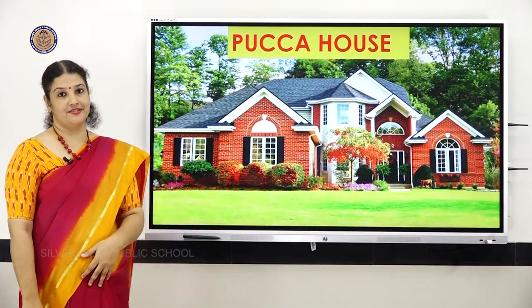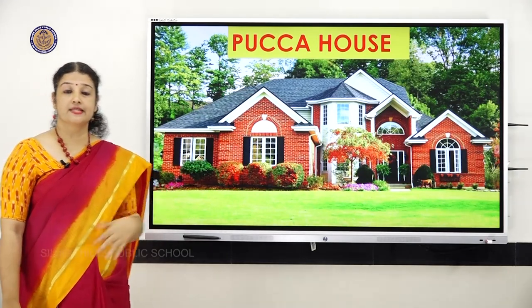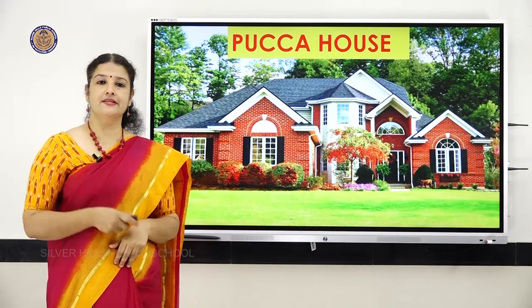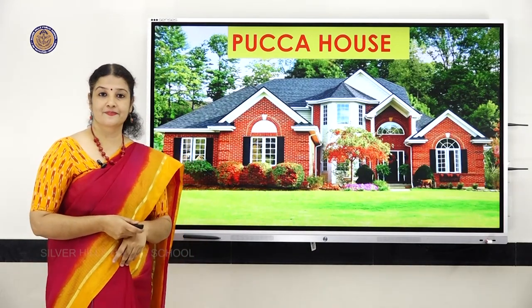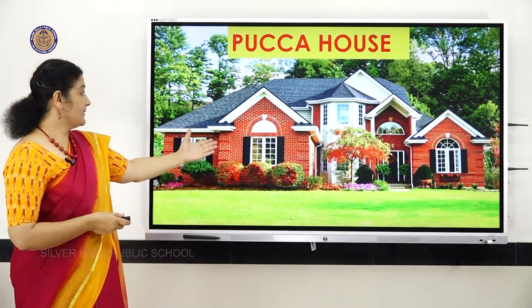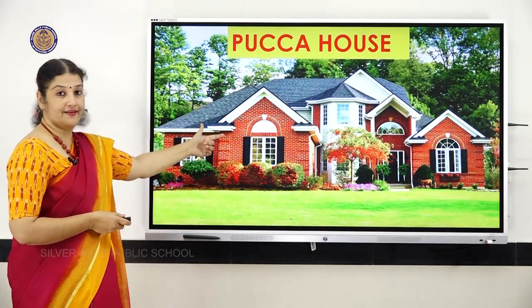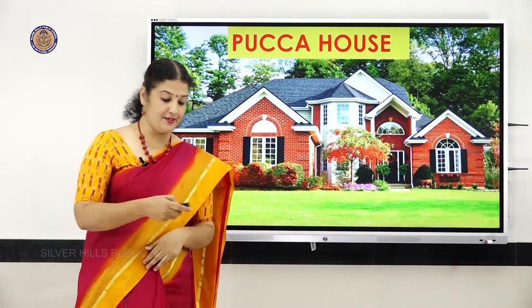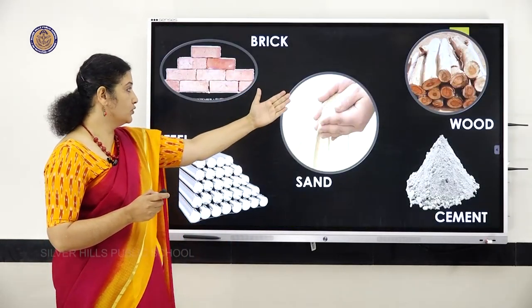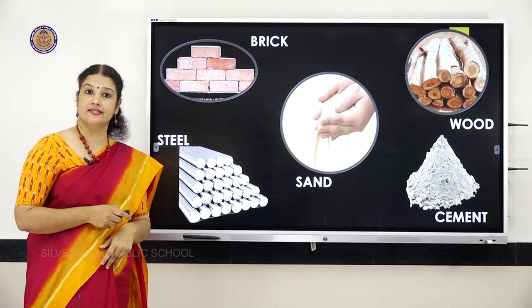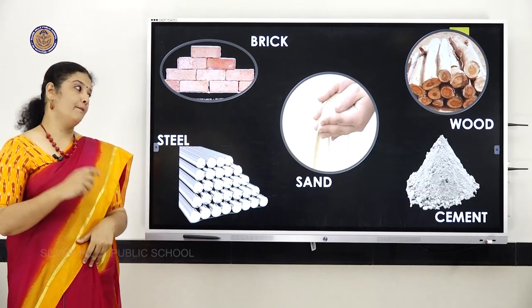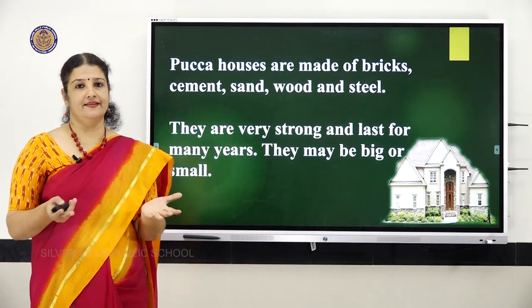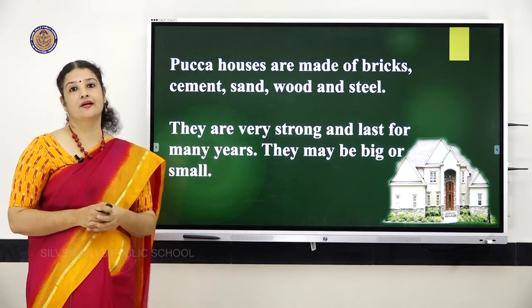Next, paka houses. Looking at these houses, you can tell they are very strong. Paka houses are strong and permanent. The materials used to build paka houses are bricks, cement, stone, sand, wood, and steel. Paka houses are strong and last for many years; they may be big or small.